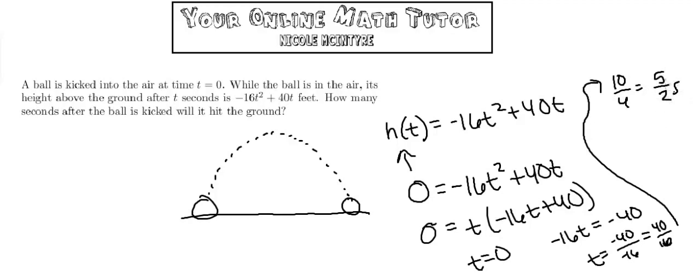That's in seconds. So now I have two different times: t equals 0 seconds and t equals 5 over 2 seconds.